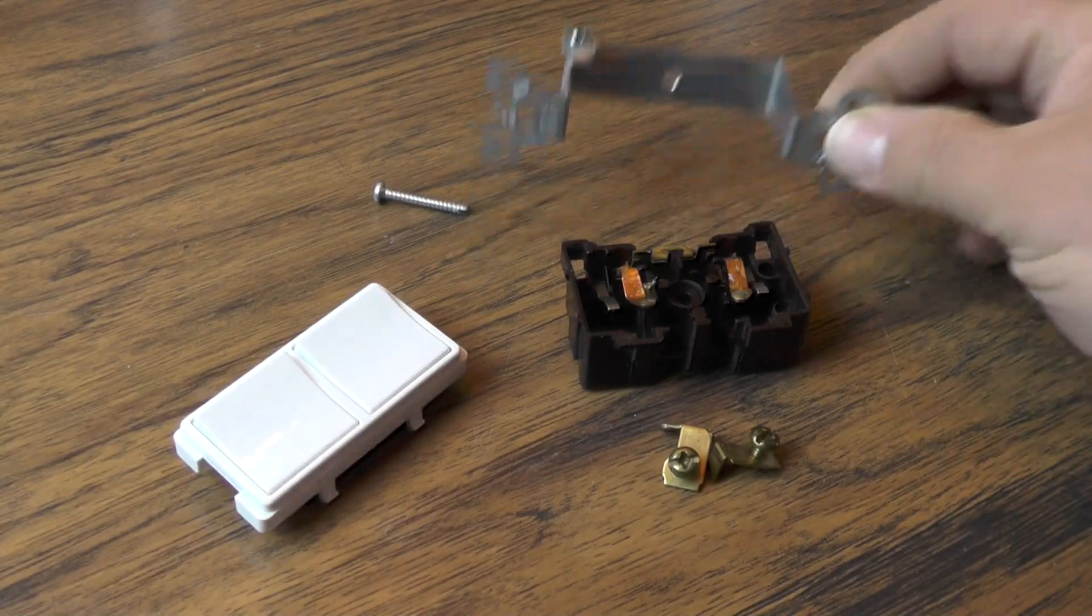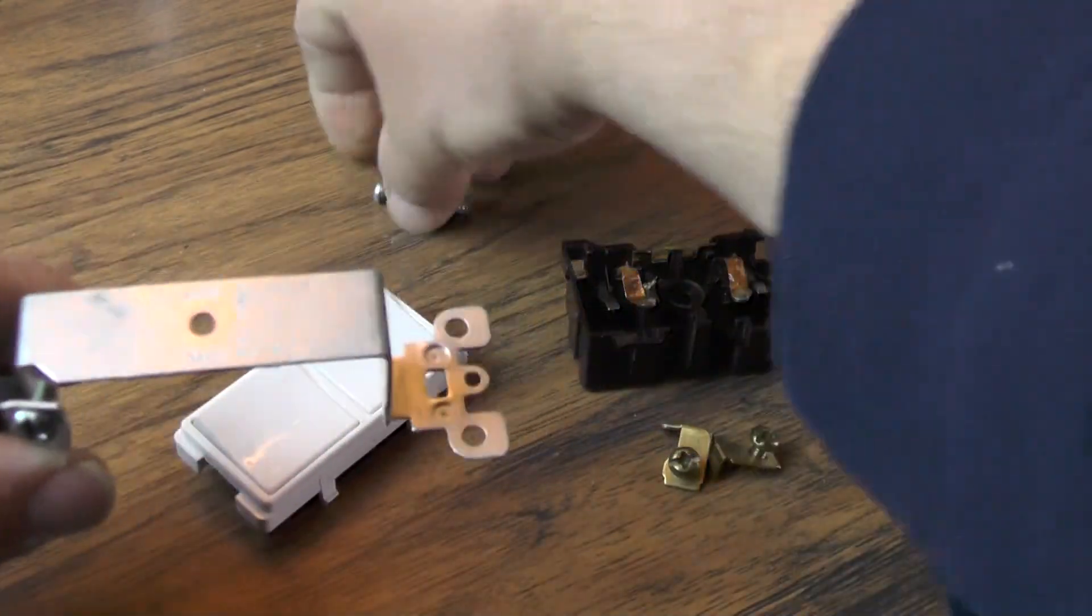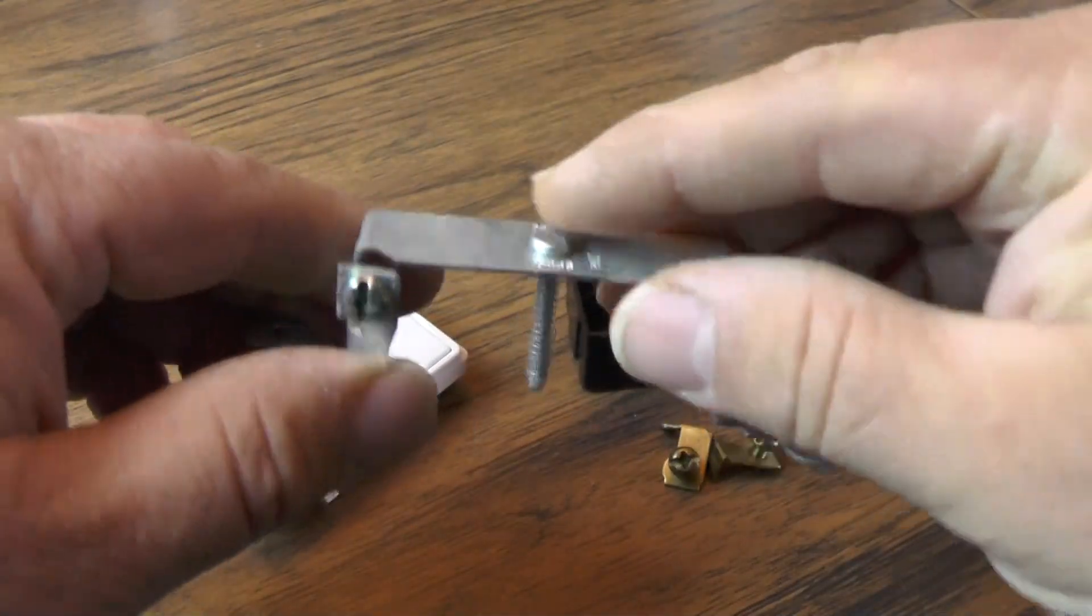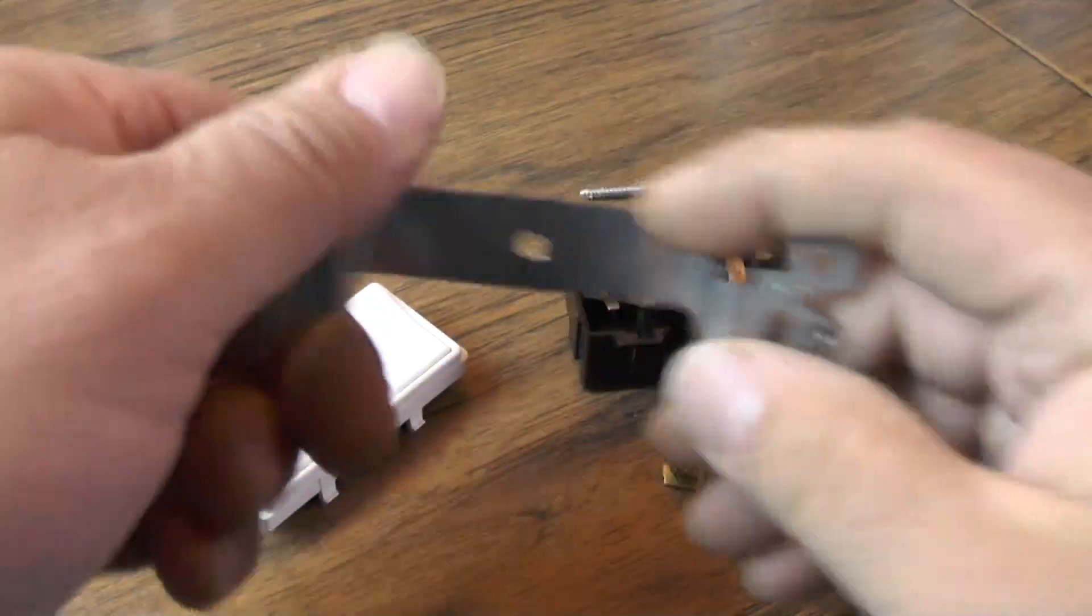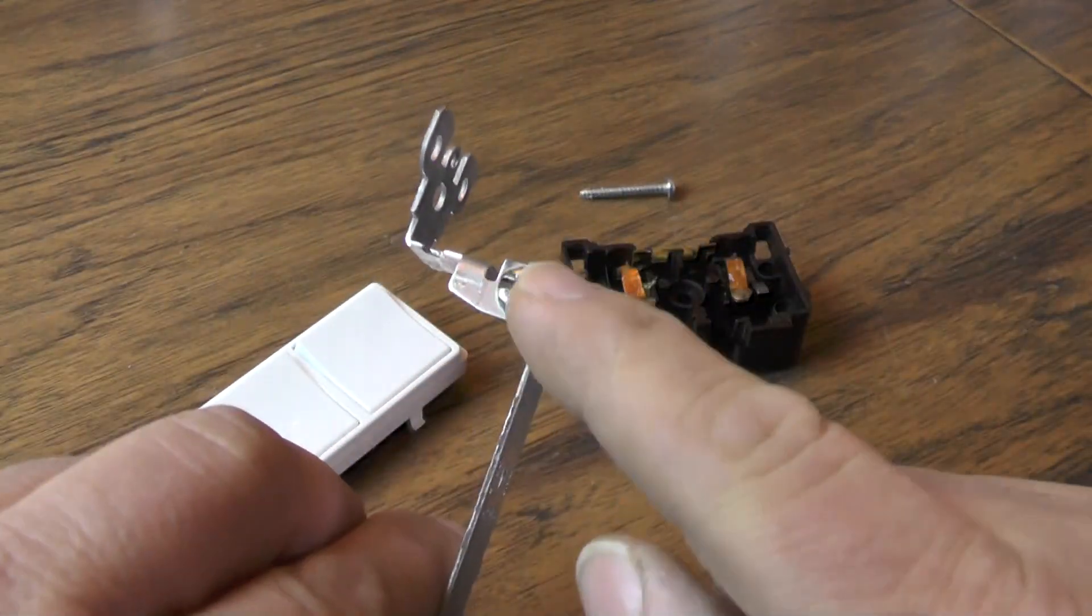So it's really kind of simple. It's just one screw that holds the whole unit together. And then once you get that off you can take the metal frame off which has your grounding screw.